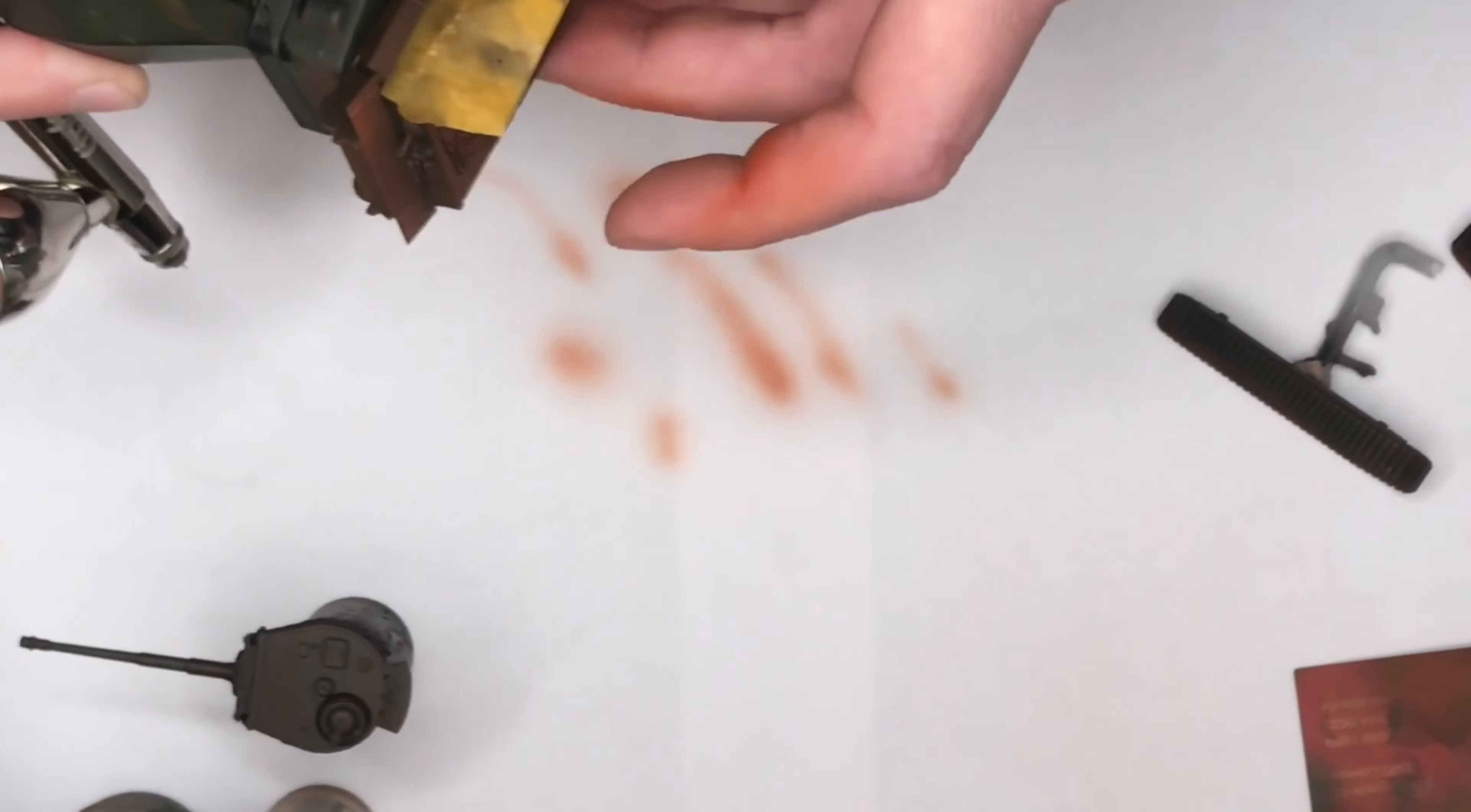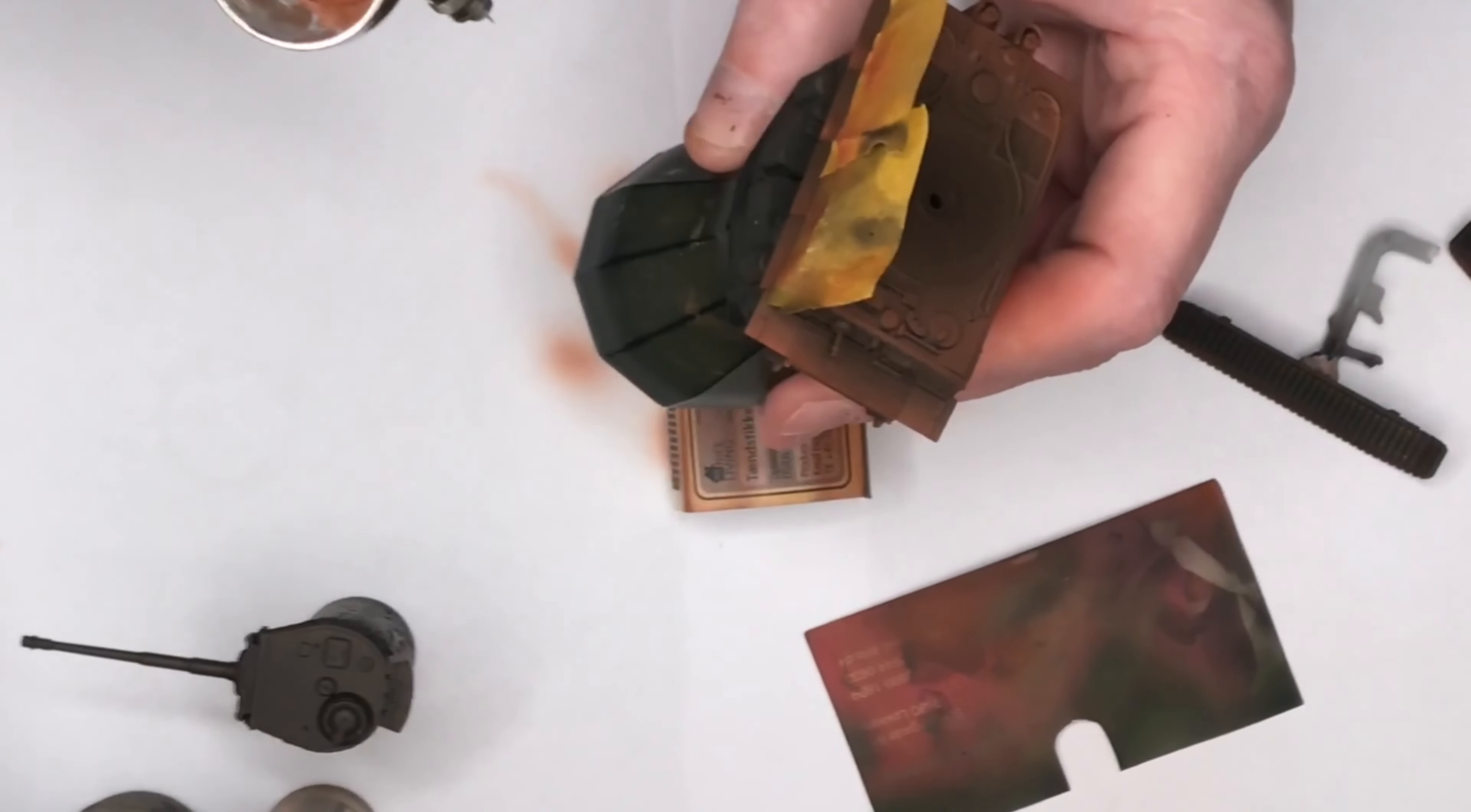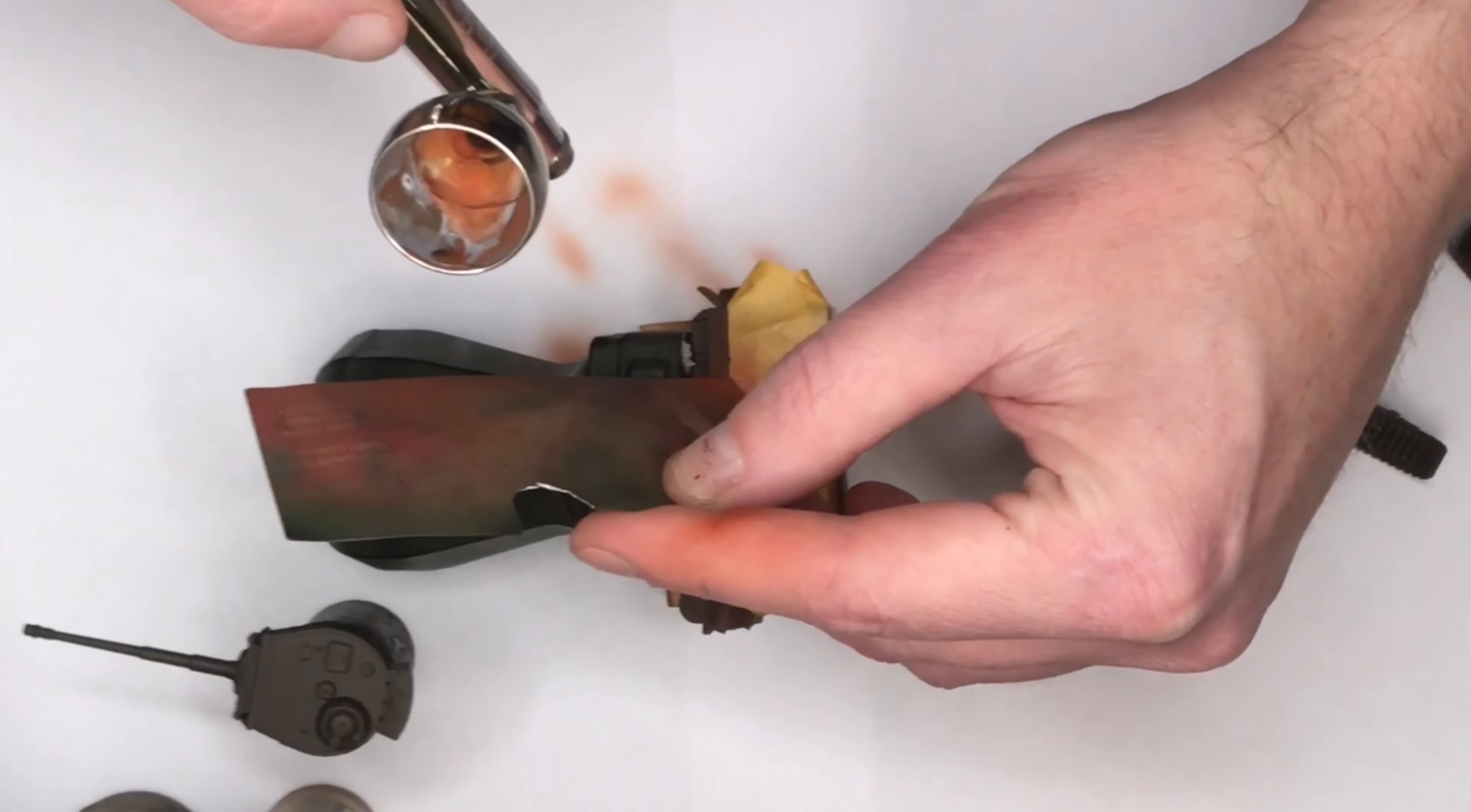So what I'm doing right now is another fun technique called modulation, where I'm masking off sections of the model and laying down paint to get a very sharp edge between the dark and the light areas. It looks quite striking, especially when playing with the model on the tabletop. You can really easily see the highlights, which looks good, I think.